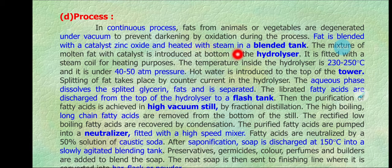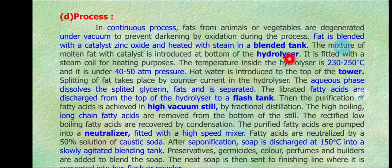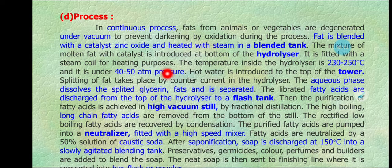The fats and zinc oxide catalyst are heated with steam in the blended tank. The mixture of molten fat with catalyst is introduced at the bottom of the hydrolyzer, which is fitted with steam coils for heating. The temperature inside the hydrolyzer is 230 to 250 degrees Celsius, and it is under 40 to 50 atmospheric pressure.